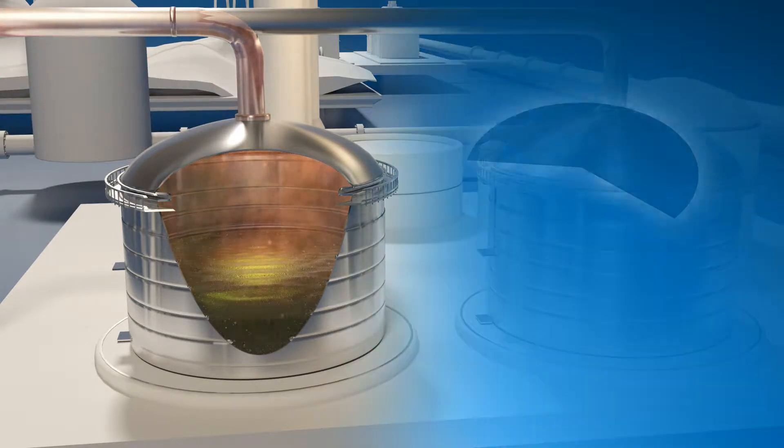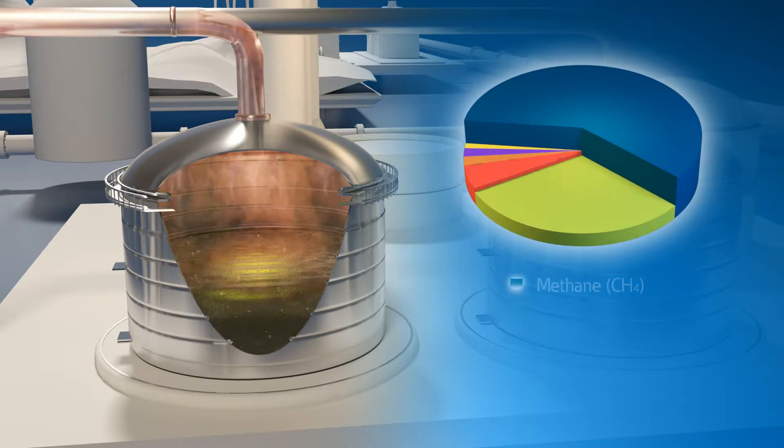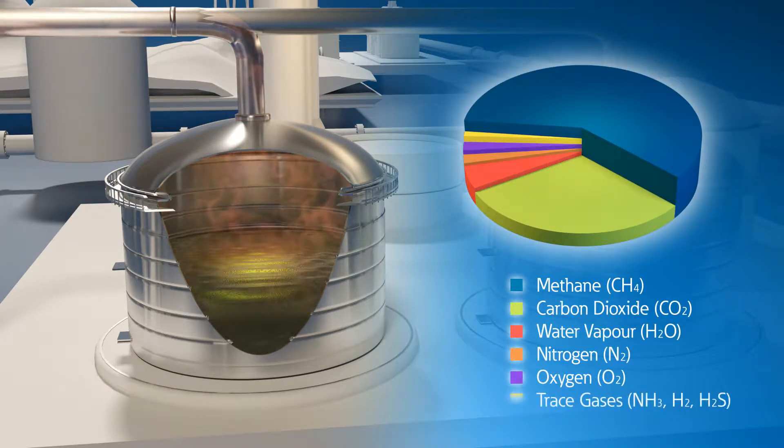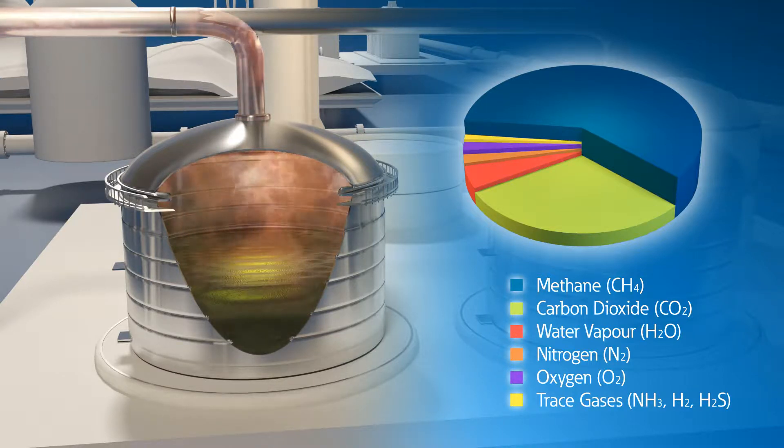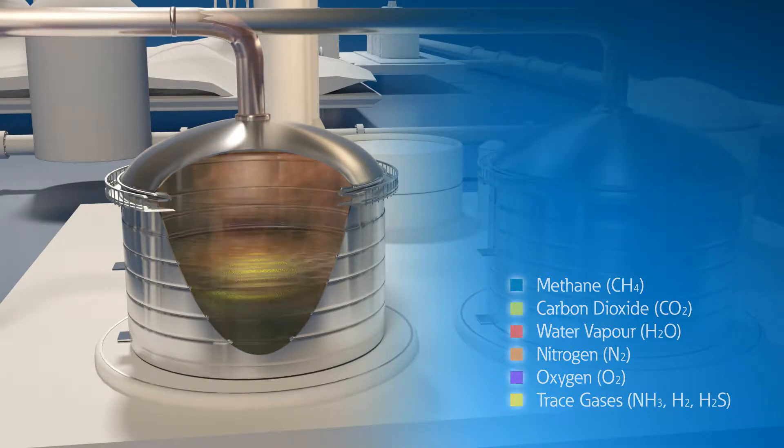It is made up primarily of methane, carbon dioxide, water vapour, nitrogen and oxygen, plus other trace elements including hydrogen sulphide. Biogas is a valuable source of methane, which can be fed into the national grid or burned locally in gas engines to produce heat and electricity.